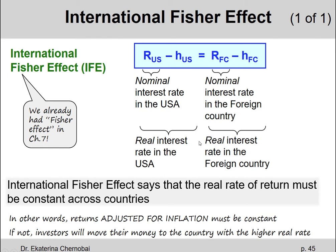What would happen if the real interest rates were not equal across different countries? It would mean that investors would always have a preference for one country over other countries. Whichever country has a higher real rate of return on their money would be the only country they would move all their money into. But in order to have a balanced world of investments, we must have this International Fisher Effect holding true.